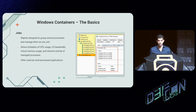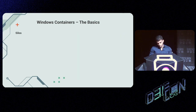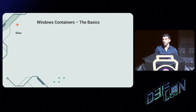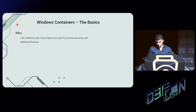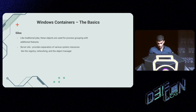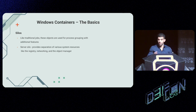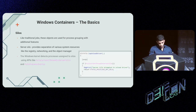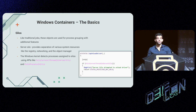Although job objects make a good start, they are not enough to provide the isolation needed for a container, which is why Microsoft created silos. Silos can be considered an extension of jobs — kind of super jobs. Containers use a type of silo called server silo, which besides providing the basic job capabilities also provides redirection of various system resources like the registry, networking, and the object manager. The Windows kernel detects processes assigned to silos using APIs like PsIsCurrentInServerSilo and PsIsProcessInSilo.